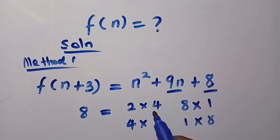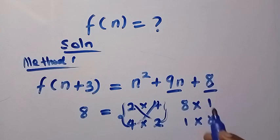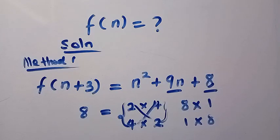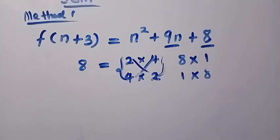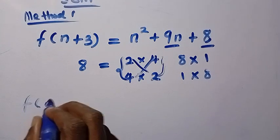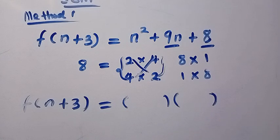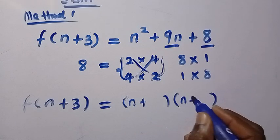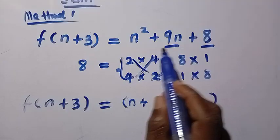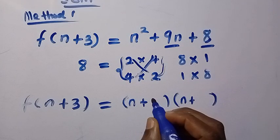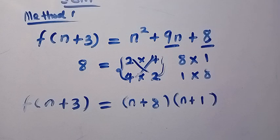So 2 plus 4 is 6, and 4 plus 2 is also 6 — we cancel those two. Coming back, either we choose 8 plus 1 or 1 plus 8; any of these work. So we have f of n plus 3 equals, creating two brackets: n plus 8 and n plus 1. Both are positive. This is how we factorize — we have two factors of the quadratic: n plus 8 and n plus 1.